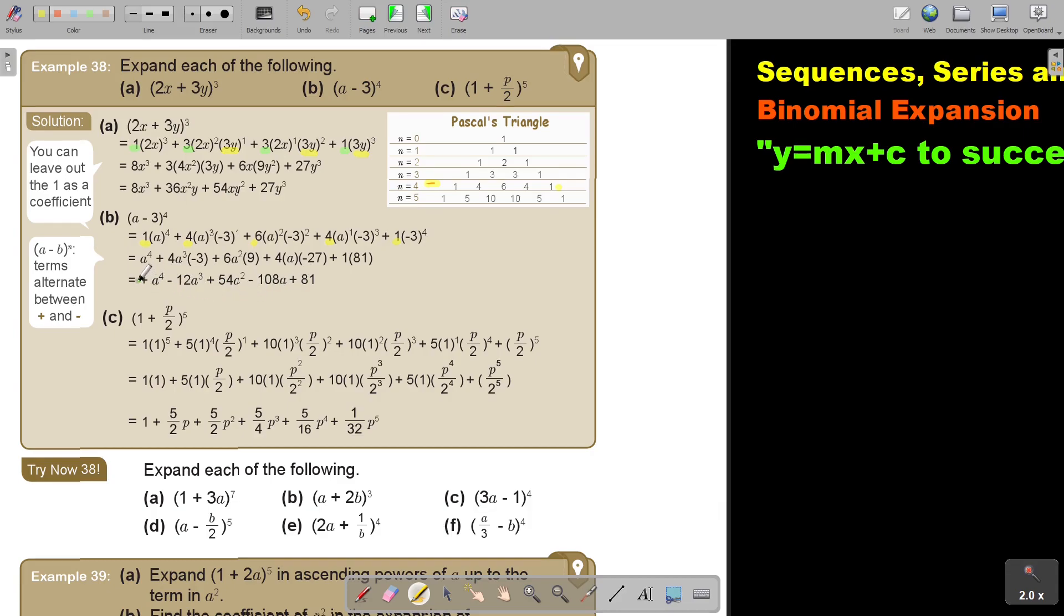So this is to the power of 4, 3, 2, 1, nothing. This is I bring it in there. Do you see? It's negative 3 to the power of 1. This is nothing, then 1, then 2, then 3, then 4. And then the terms will work out. And then I first bring this in, and then I multiply out and I get my answer.